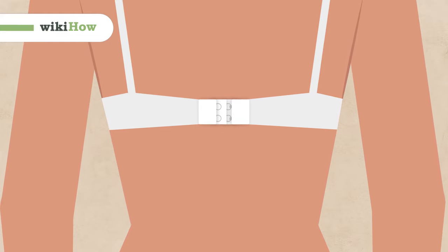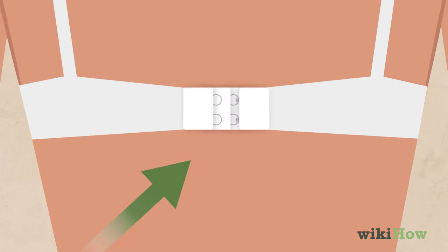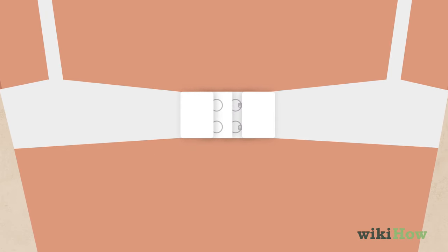To undo a bra one-handed, first feel for the clasp on the back of the bra, which will be in the center of the band and feel thicker than the rest of the fabric.